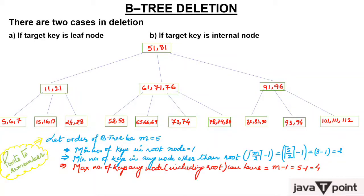With order m = 5, the maximum number of children is 5, so the maximum number of keys is 4, since children are always one more than the number of keys. Now consider the minimum number of keys — this is critical for deletion. The minimum number of keys in the root is 1; the root will not allow 0 elements. The minimum number of keys in any node other than the root is ceiling of (m/2) minus 1. With m = 5, that is ceiling(2.5) minus 1 = 3 minus 1 = 2. So no node other than the root can have fewer than 2 keys. Remember this carefully — only then will you understand deletion.